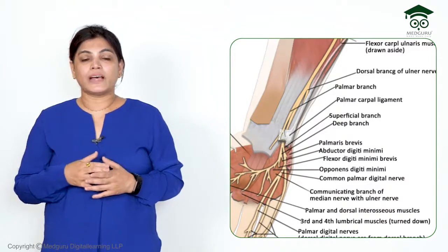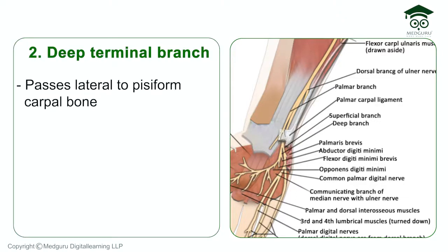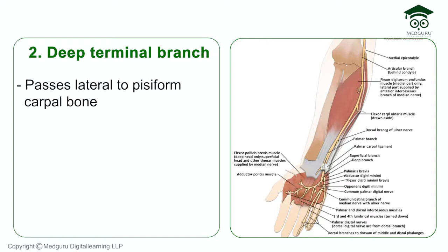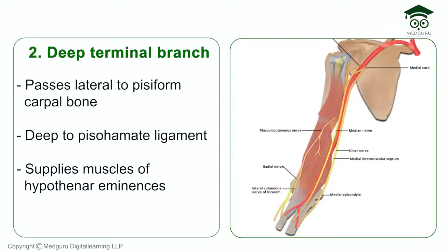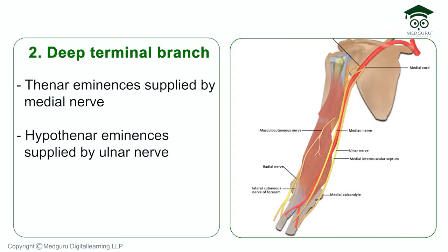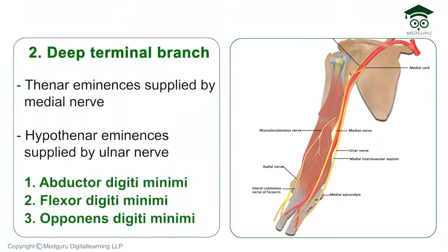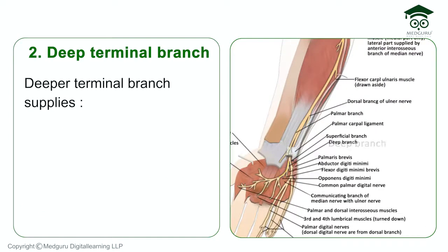The deep terminal branch of the ulnar nerve passes lateral to the pisiform carpal bone and deep to the pisohamate ligament. It then supplies the muscles of the hypothenar eminence: abductor digiti minimi, flexor digiti minimi, and opponens digiti minimi. The thenar eminence muscles are supplied by the median nerve, while the hypothenar muscles are supplied by the ulnar nerve.